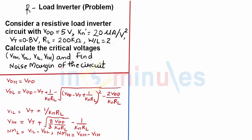Welcome to in 5 minutes. The agenda of this clip is to find the noise margin and the critical voltages for a resistive load inverter with the following parameters given to us.